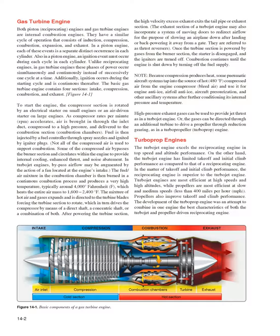Gas Turbine Engine. Both piston reciprocating engines and gas turbine engines are internal combustion engines. They have a similar cycle of operation that consists of induction, compression, combustion, expansion, and exhaust. In a piston engine, each of these events is a separate distinct occurrence in each cylinder, and an ignition event must occur during each cycle in each cylinder. Unlike reciprocating engines, in gas turbine engines these phases of power occur simultaneously and continuously instead of successively one cycle at a time. Additionally, ignition occurs during the starting cycle and is continuous thereafter.